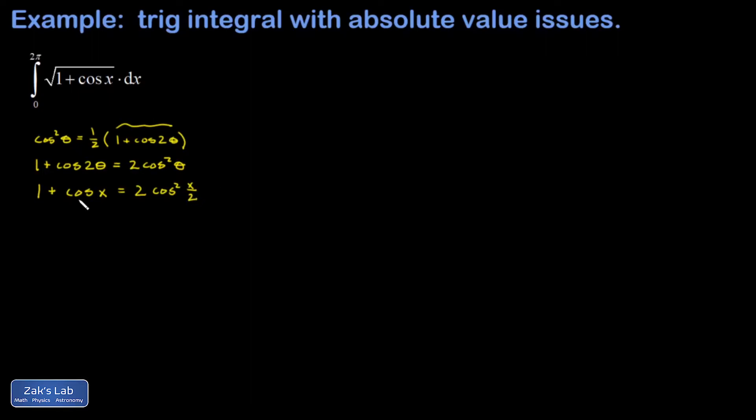And the whole point of this is that now we can replace the interior of the square root with something that's easy to take the square root of. And I'll go ahead and pull out the square root of 2 and it's tempting at this point to just say well the square root of the square of the cosine is just the cosine. But there's a subtle issue lurking here.